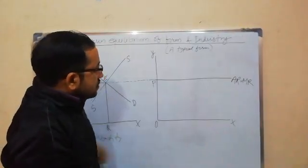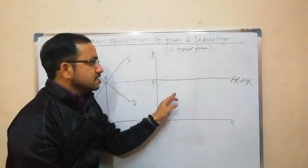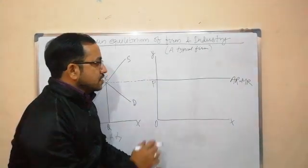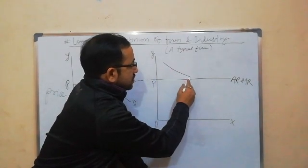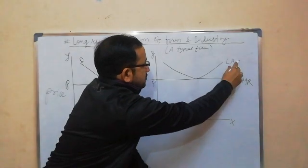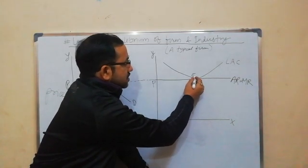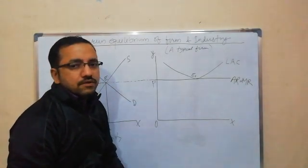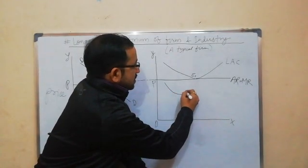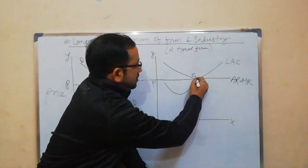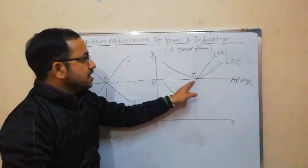This OP price will be accepted by the typical firm. Under perfect competition, the AR and MR curves are the same line, parallel to the x-axis, because price remains constant. In the long run, we draw a LAC curve which is tangent to the AR curve at point e1. We also draw the long run marginal cost curve (LMC), which cuts the MR curve from below at point e1.